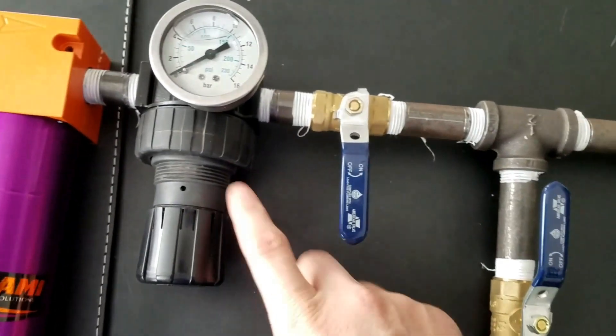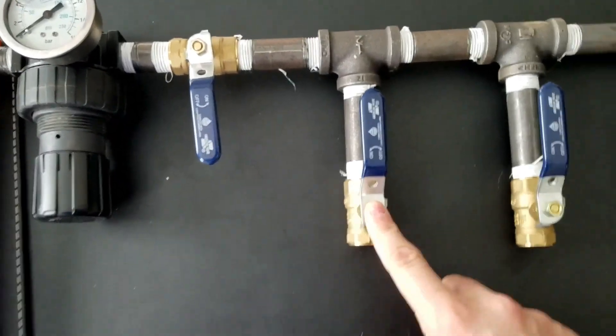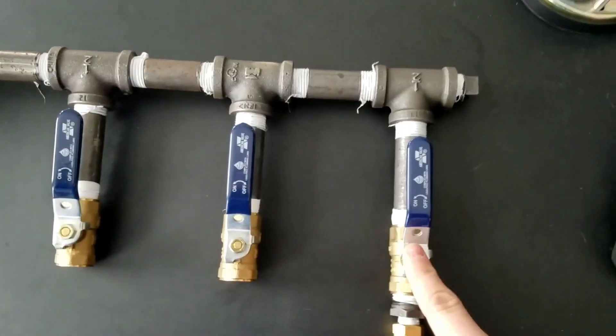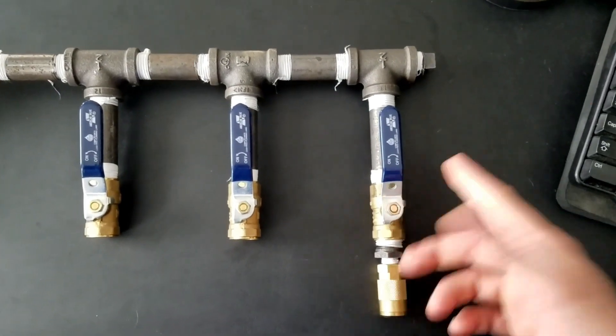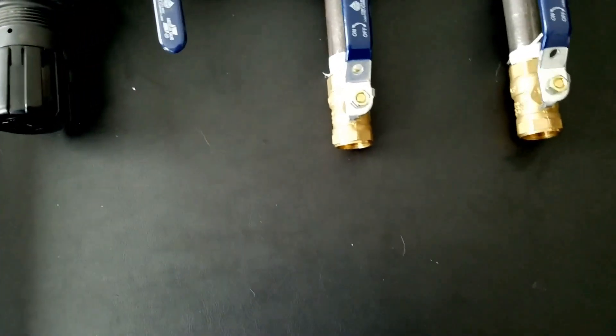So this is our main shut-off to our manifold. This right here would be for, say, our rinsing one-inch pump. This would be for our chem pump. And then this would be if you wanted to fill up tires or do whatever, blow something out of your truck. Then we'll just reduce it down to whatever fittings that we need to hook up our pumps and things like that.